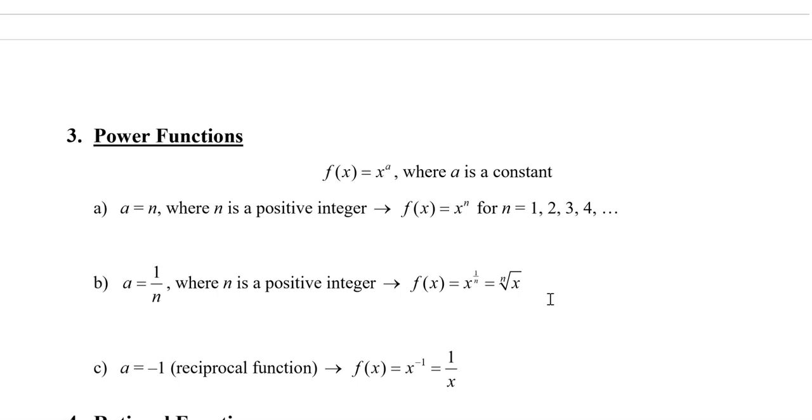Next, we have the power functions. This is where we have f(x) = x^a, where a is a constant. If a = n, where n is a positive integer, so x^n where n is 1, 2, 3, 4, etc., then we have the ones that we were just looking at before. For example, we have y = x, which is a line. y = x², we get the parabola. y = x³, we have a cubic graph.